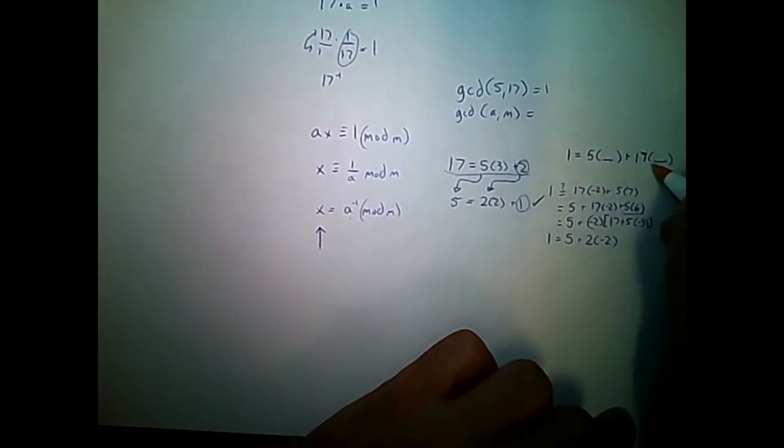And if I look here for what we're trying to find, we're done. We have 17 and 5. So, I can plug in 7 and negative 2.